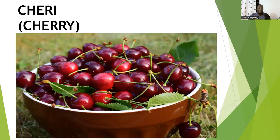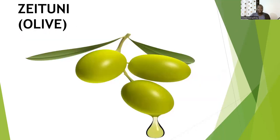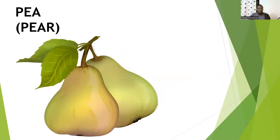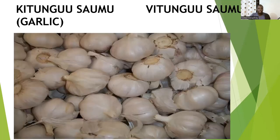Then there is cheli. Then there is zaytun — olive. Then there is pea — pear, almost the same as English. Then there is kitungu saumu — garlic. In plural is vitungu saumu.